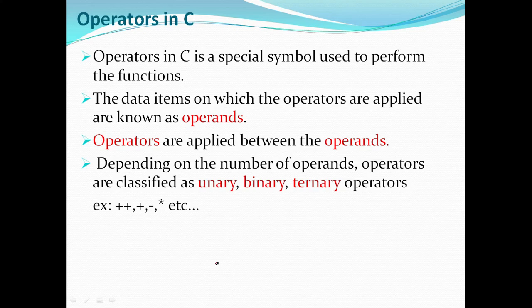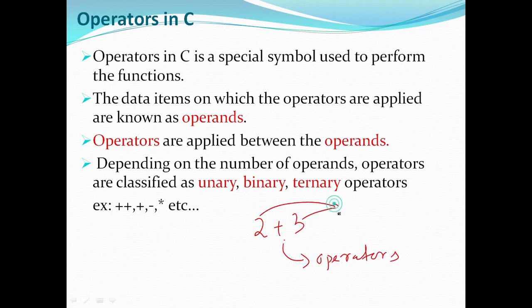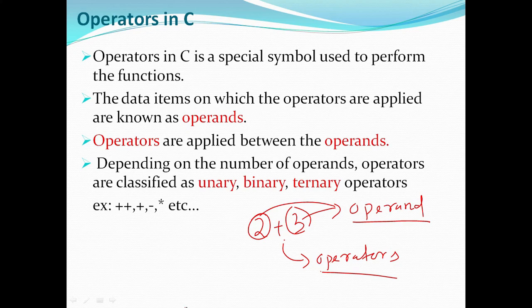The operator in C is a special symbol used to perform an operation. The data item on which the operator is applied is known as operands. Operators are applied between operands. Depending on the number of operands, operators are classified into unary, binary, and ternary operators. Examples include plus, minus, multiplication, division, modulus, greater than, less than, and equal to. There are 7 types of operators, which will be covered in the next video.